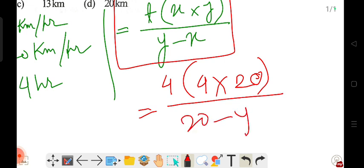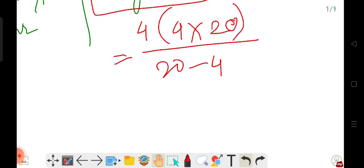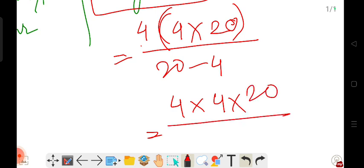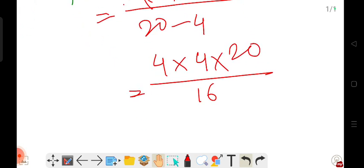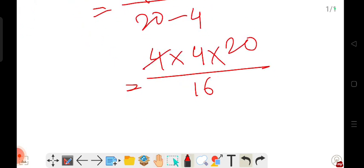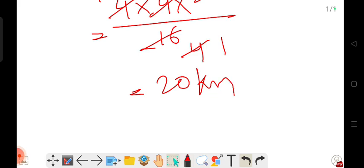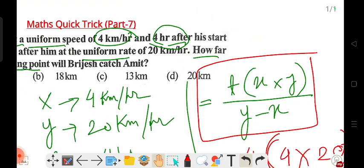So it's four into X into Y. That's 4 into 20 divided by 20 minus 4, which gives us 16. Four times four times 20 divided by 16. Simplifying this calculation, we get 20 kilometer as the answer.